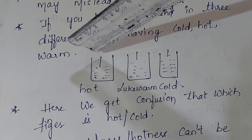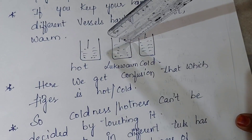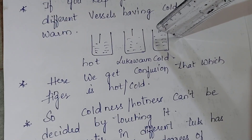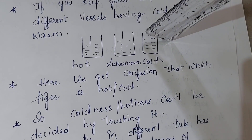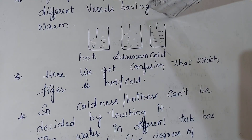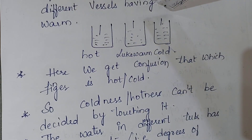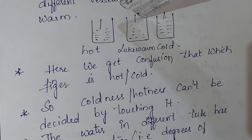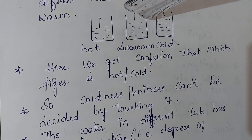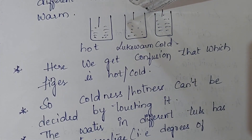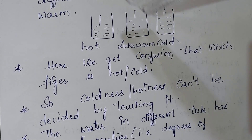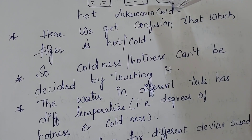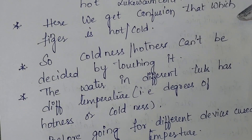Here is an experiment to show this. Take three vessels with hot water, lukewarm water — not so cool and not so hot — and cold water. Put two fingers, one from each hand, into the hot and cold water simultaneously — you can feel it is hot and it is cold. But if you then move both fingers into the lukewarm water, you can't judge which finger is hot and which is cool. So by touching, you can't judge; we need a correct measurement for temperature.